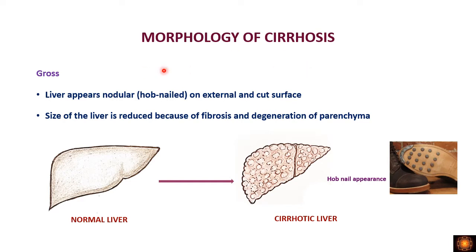Now coming to the gross morphology of cirrhosis: the liver appears nodular, with a nodular surface also called a hobnail appearance. Hobnails are nails used at the bottom of shoes for firm grip, with large heads — similarly the liver has a knobbed appearance on its surface.